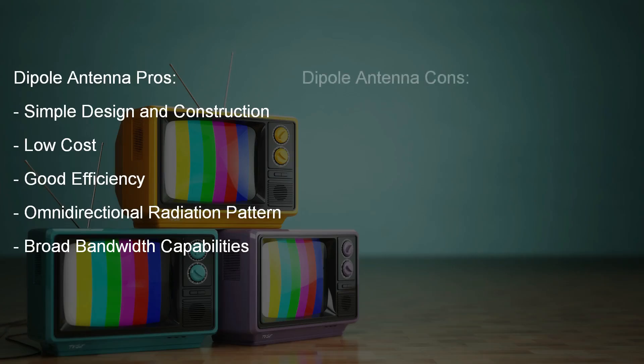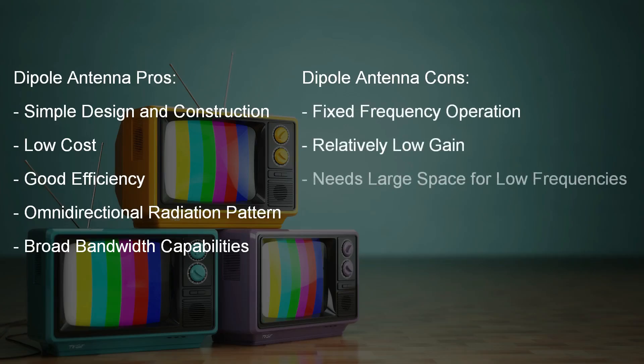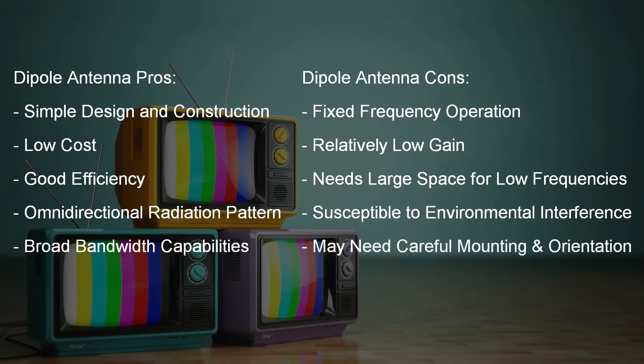Top disadvantages of dipole antennas: fixed frequency operation, relatively low gain, require large physical space for low frequencies, susceptible to environmental interference, and may need careful mounting and orientation.